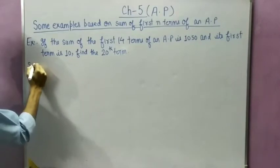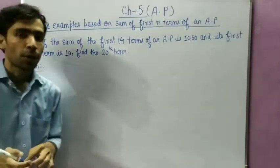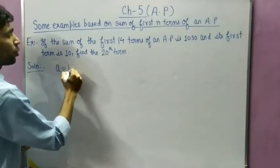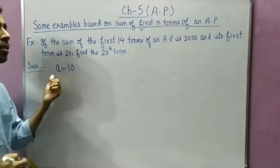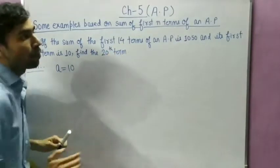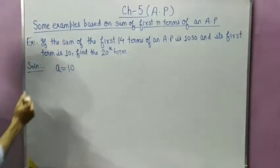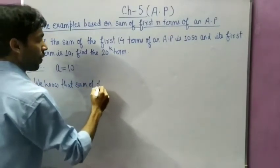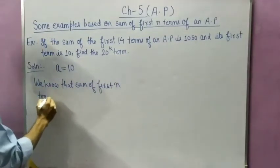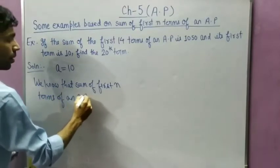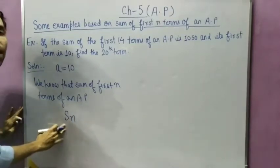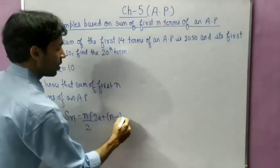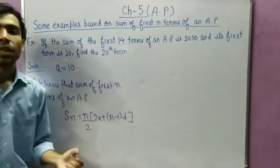Before solving this question, we will write down whatever information is given. The first term is given, which is represented by small a, so a is equal to 10. The sum of the first 14 terms is 1050. We know that the sum of first n terms of an AP is SN = n/2 multiplied by (2a + (n−1)d). This is the formula for the sum of first n terms.